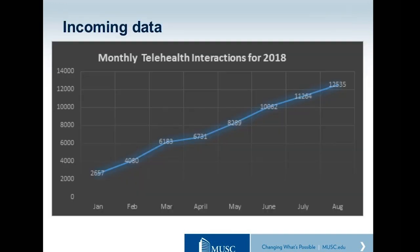You might be concerned about being overwhelmed by all this incoming data. With about 600 patients, we're now receiving about 13,000 data points per month — each data point being a blood glucose or blood pressure measurement. The platform is designed to handle this volume so it doesn't overwhelm providers.